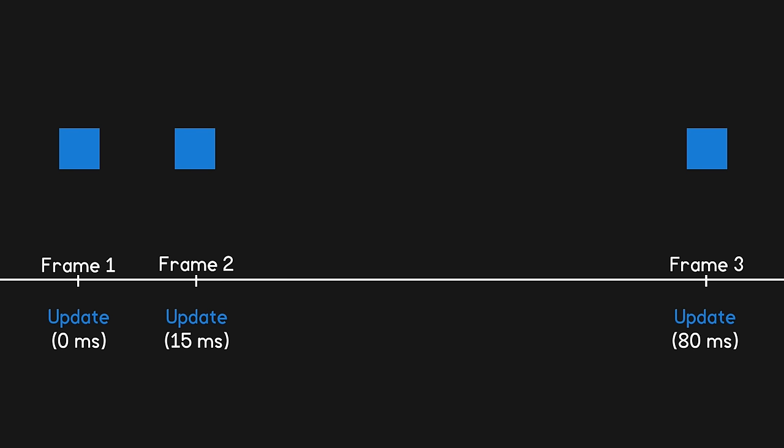There's another update method called fixedUpdate, which we almost always use when we're working with rigidbodies. Unlike update, fixedUpdate doesn't care when the scene is drawn — instead it's called at a fixed interval, the default being every 20ms. So we'd have our first fixedUpdate call at time 0, then 20ms later it would be called again.